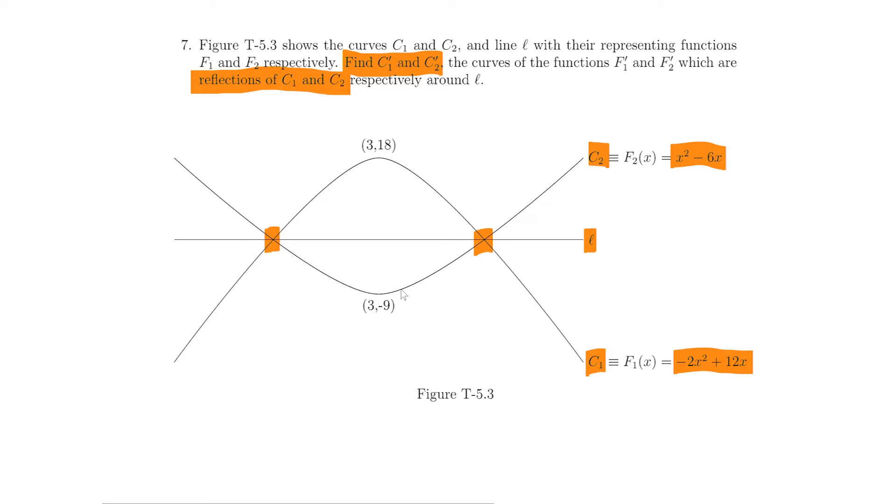Which means for C1 the reflection would be something like this about L, it would be something like this. And for C2 the reflection would be something like this.